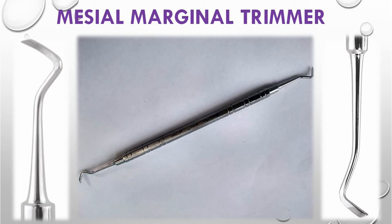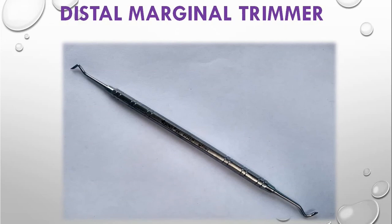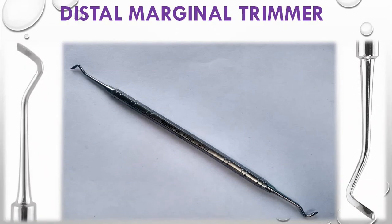The gingival marginal trimmer (GMT) comes in two types: mesial and distal marginal trimmer. The mesial one is used for operating on the mesial side of the tooth and the distal marginal trimmer for the distal side, with their blades curved accordingly. GMTs are used to produce a proper slope on the gingival enamel margins for Class 2 cavity preparation and to round or slope the axial pulpal line angle in Class 2 cavity preparation.